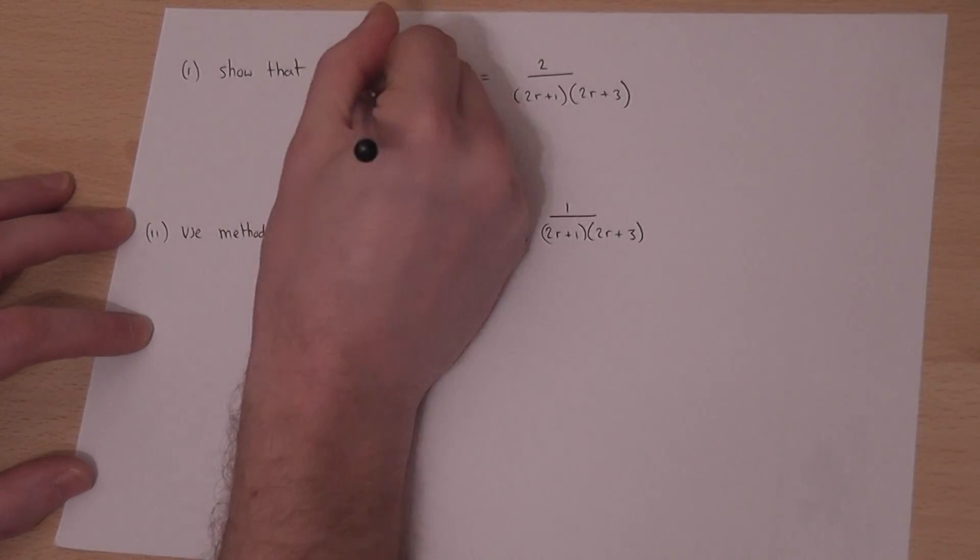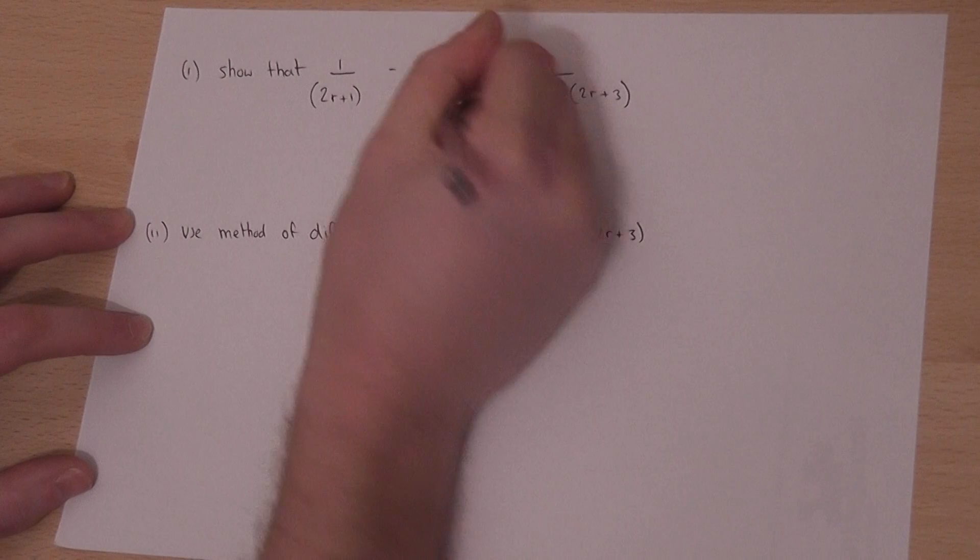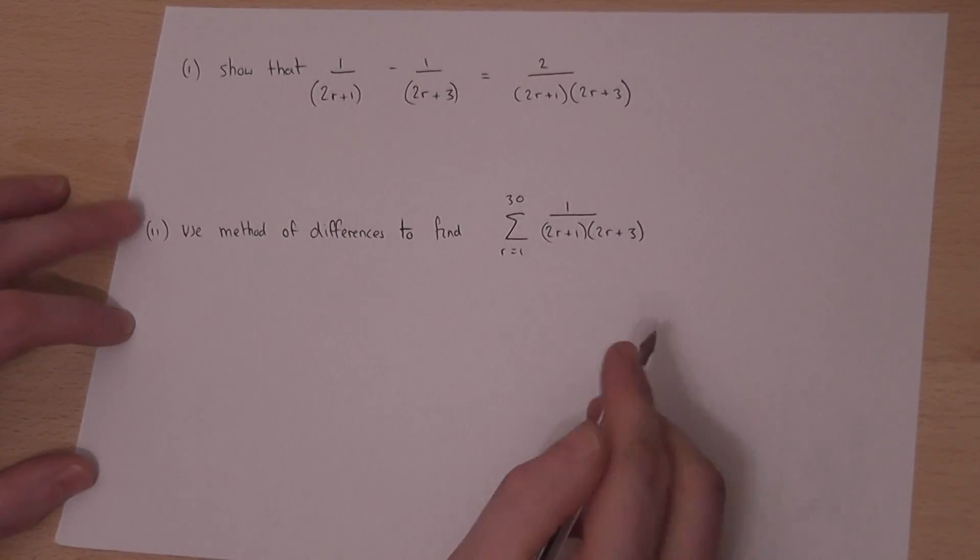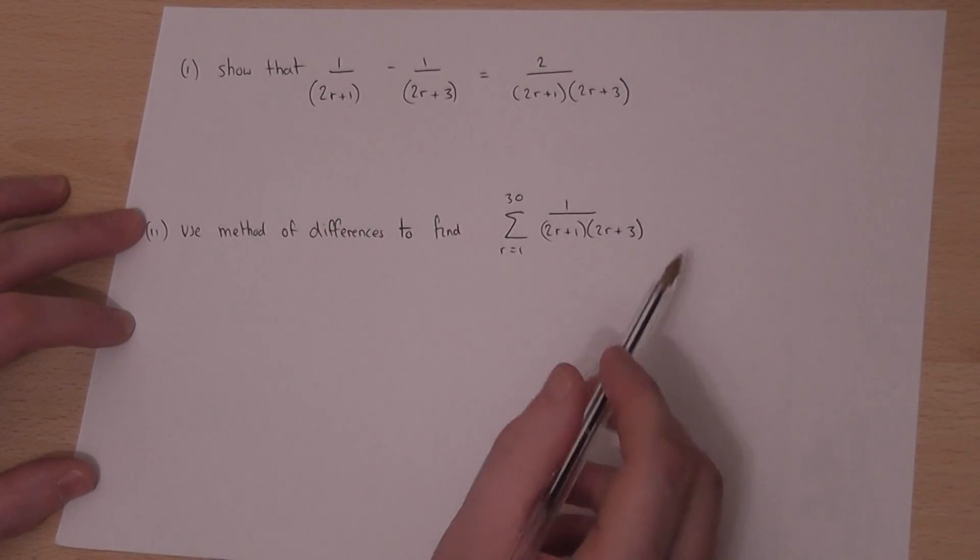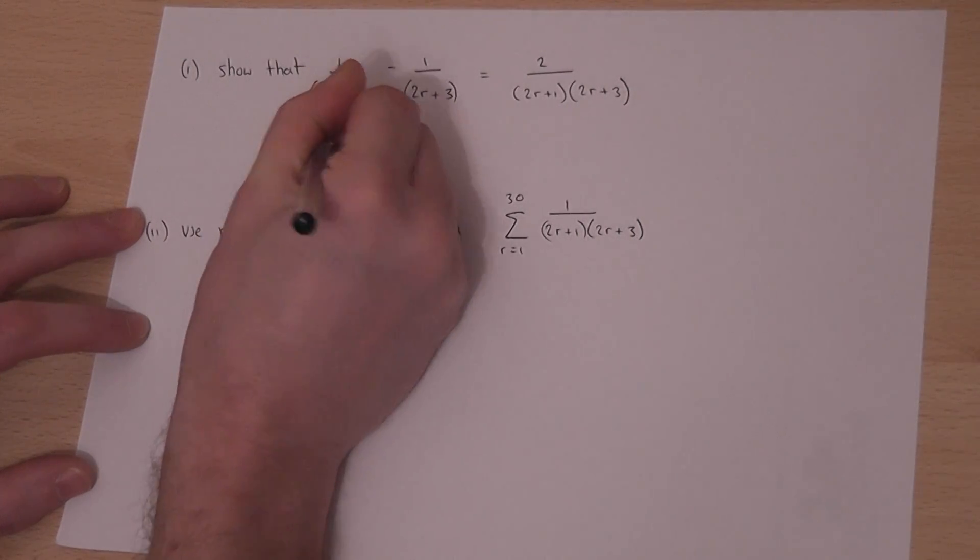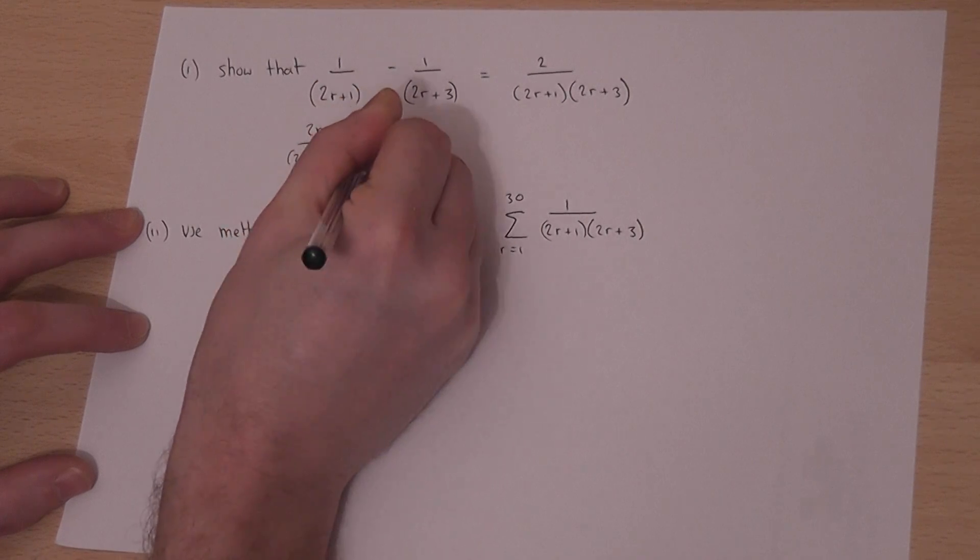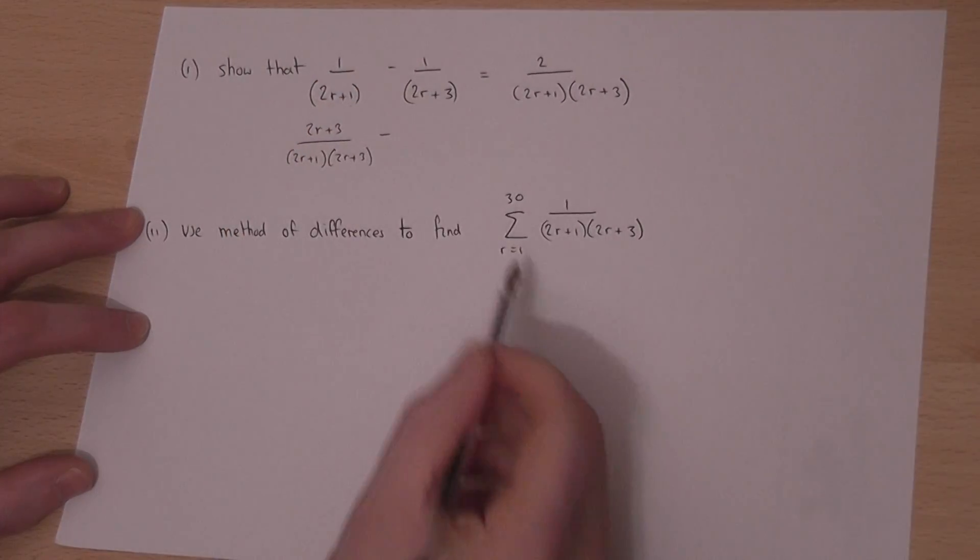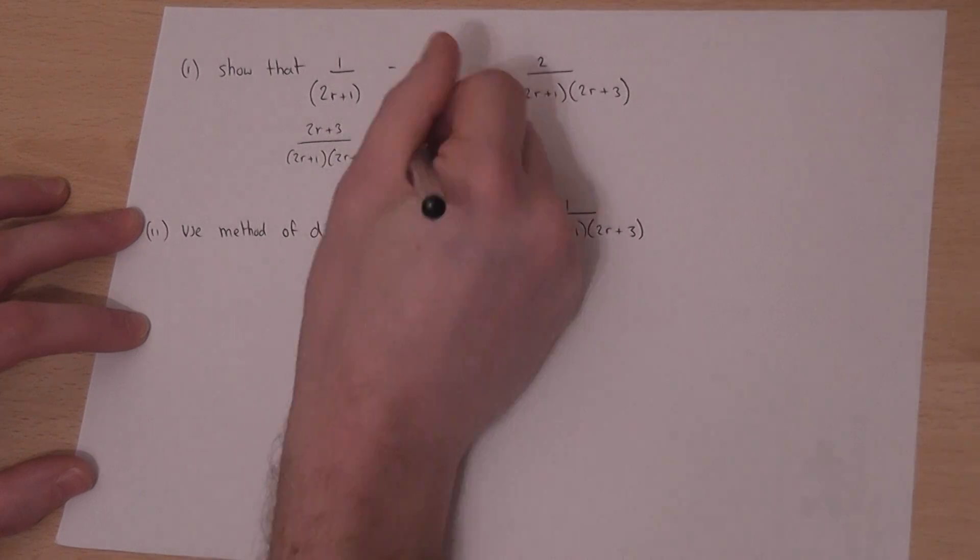Now when we add or subtract fractions we put brackets around the denominators and of course I want to have the same denominator. So I'll times top and bottom of this by 2r plus 3. Take away, times top and bottom by 2r plus 1.